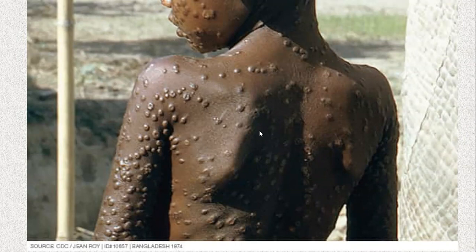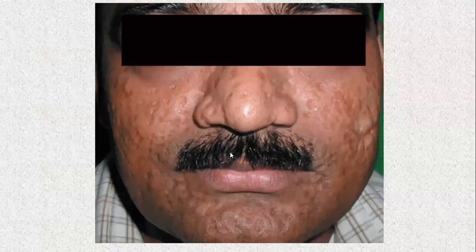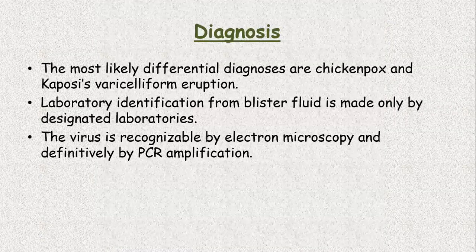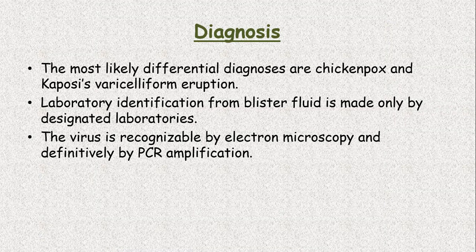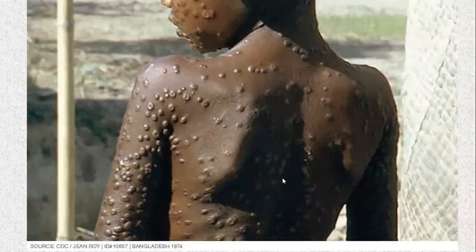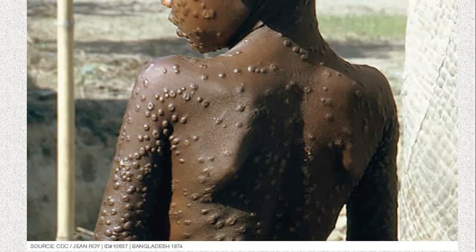This is the post-smallpox scarring — a very unsightly appearance. The most likely differential diagnoses are chickenpox and Kaposi varicelliform eruption. The laboratory identification from blister fluid is made only by designated laboratories. Virus is recognizable by electron microscopy and by PCR amplification. Another thing to mention about this rash: in chickenpox the rash occurs in crops, so at one time you can see a polymorphic type of rash — there will be a few macules, a few vesicles, a few pustules and crusted lesions. But smallpox does not occur in crops — there is only one crop and all the lesions are in the same stage of evolution.